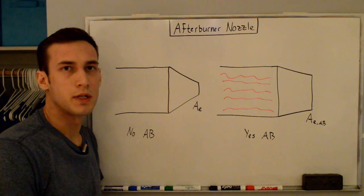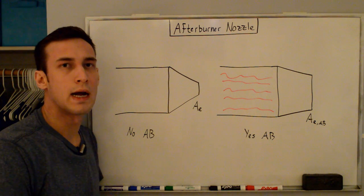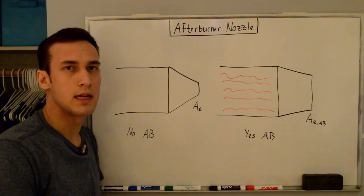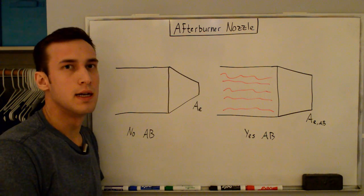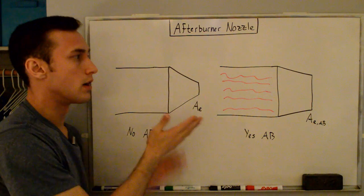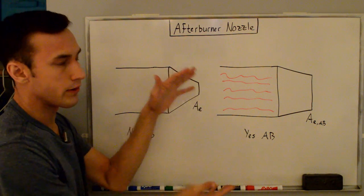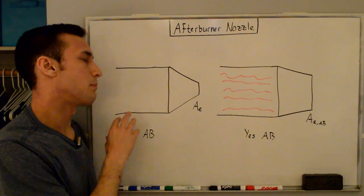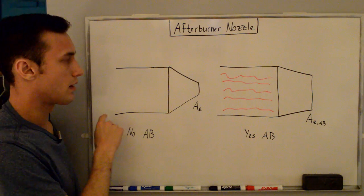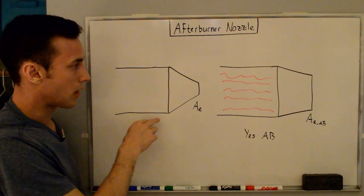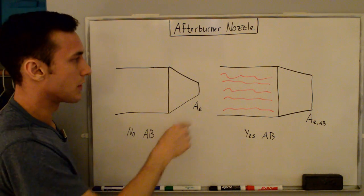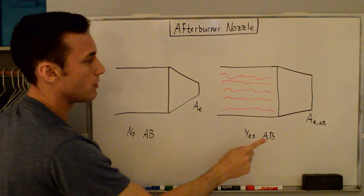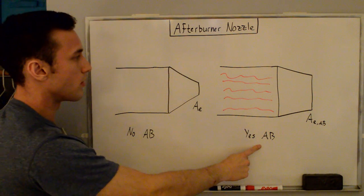Hey everyone, in this video I'm going to go through an example showing you why, when you turn on the afterburner in a jet engine, the nozzle area opens up wider.